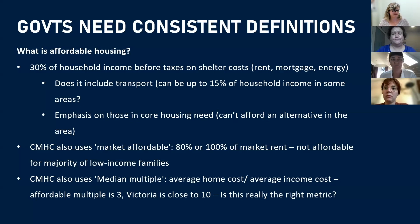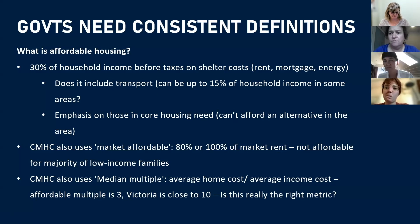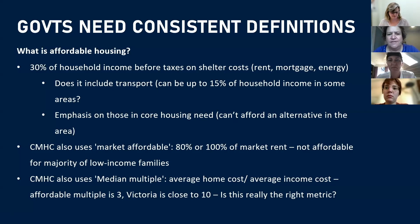Tax household income on housing costs, which could be rent or mortgage, includes energy costs. It doesn't include transport, although we know that more and more people are driving until they qualify for a mortgage or to get rent. And we know that that emphasizes people in core housing need — and I'll get to that definition in a moment — so people who are currently living in unaffordable or unsuitable homes, rather than people who are driving until they qualify.